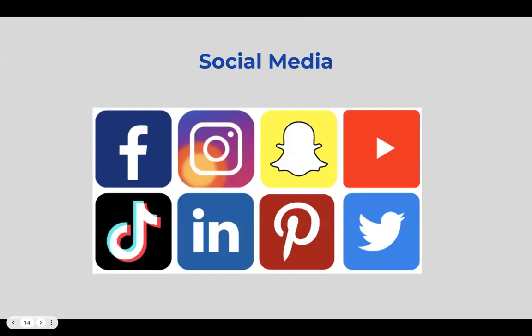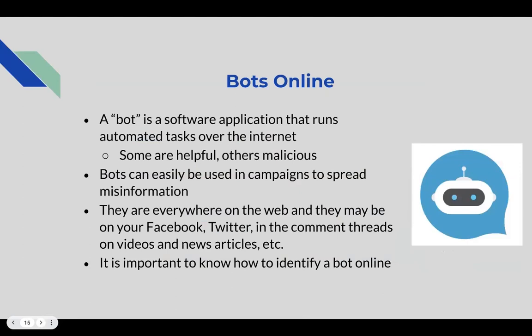Now we're going to talk about social media, another very important category when it comes to reliable information. To start, we'll discuss bots online. A bot is a software application that runs automated tasks over the internet. Some are helpful while others may be malicious, since bots can easily be used in campaigns to spread misinformation — one of the reasons they are not going to be providing you with reliable information. They are everywhere on the web, including Facebook, Twitter, comment threads on videos and news articles.